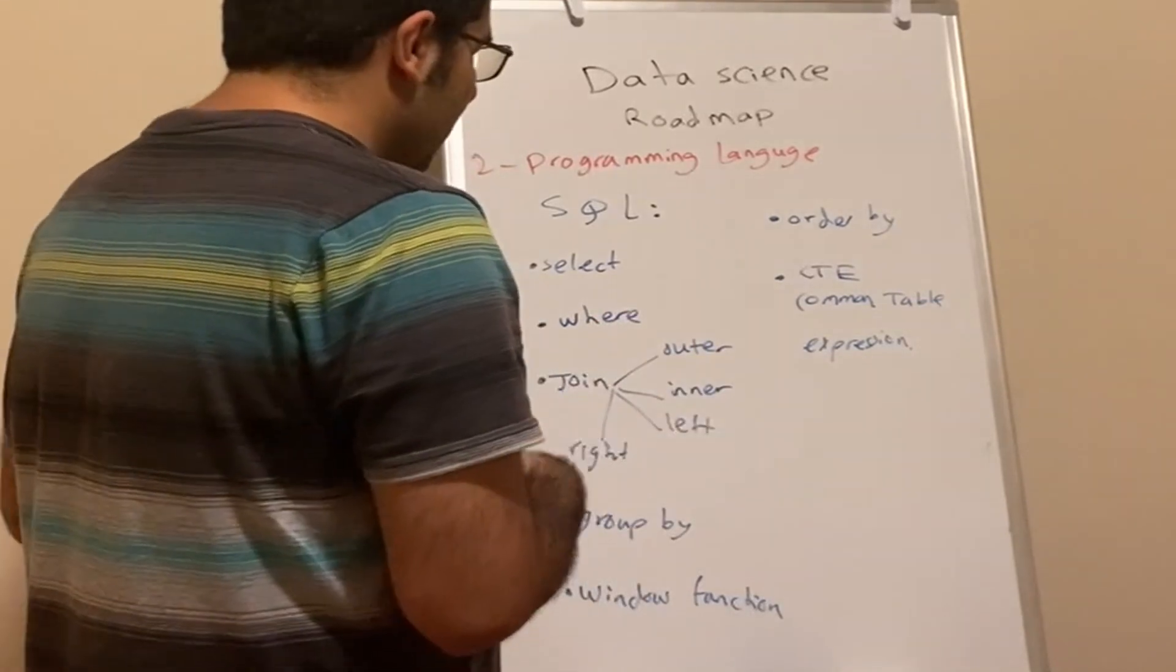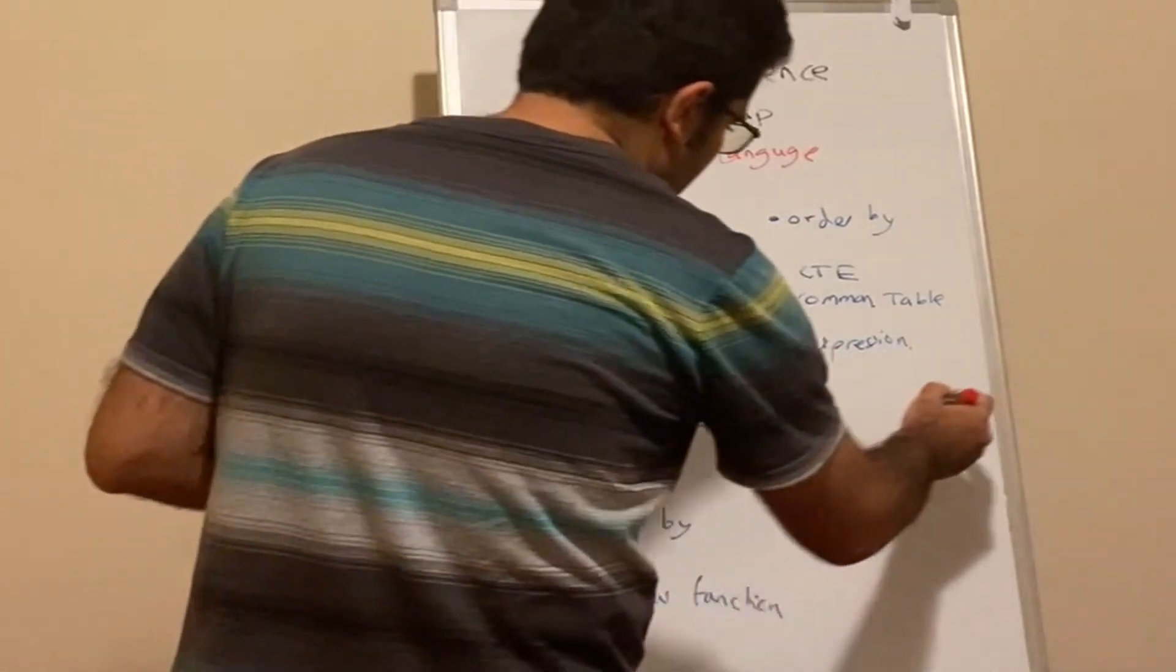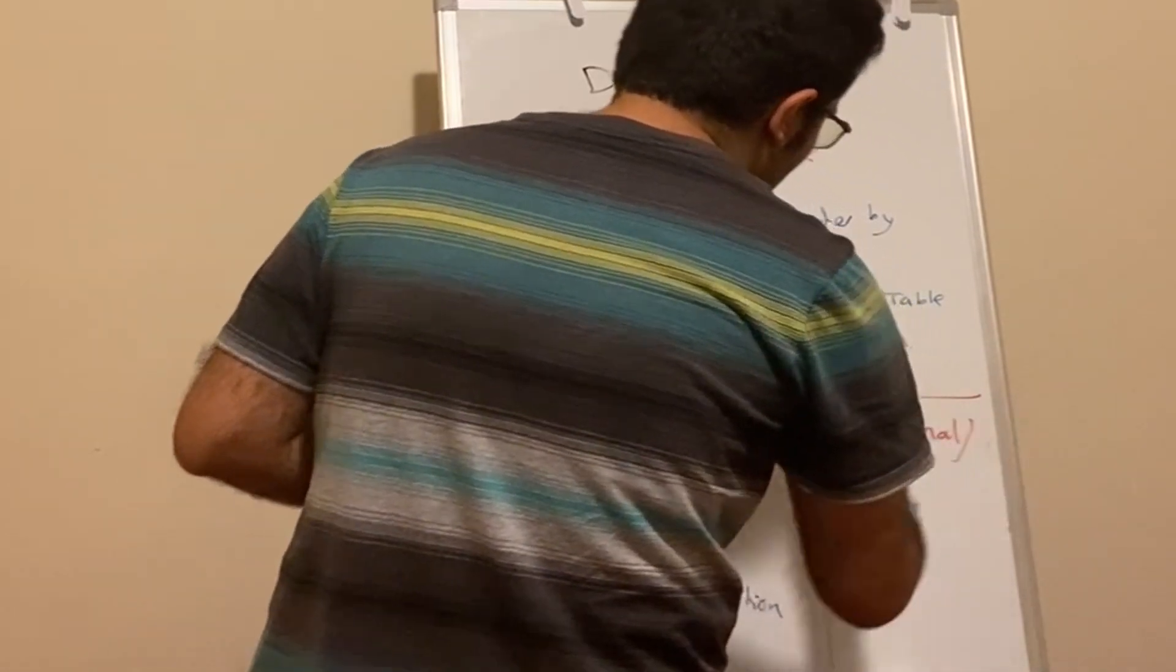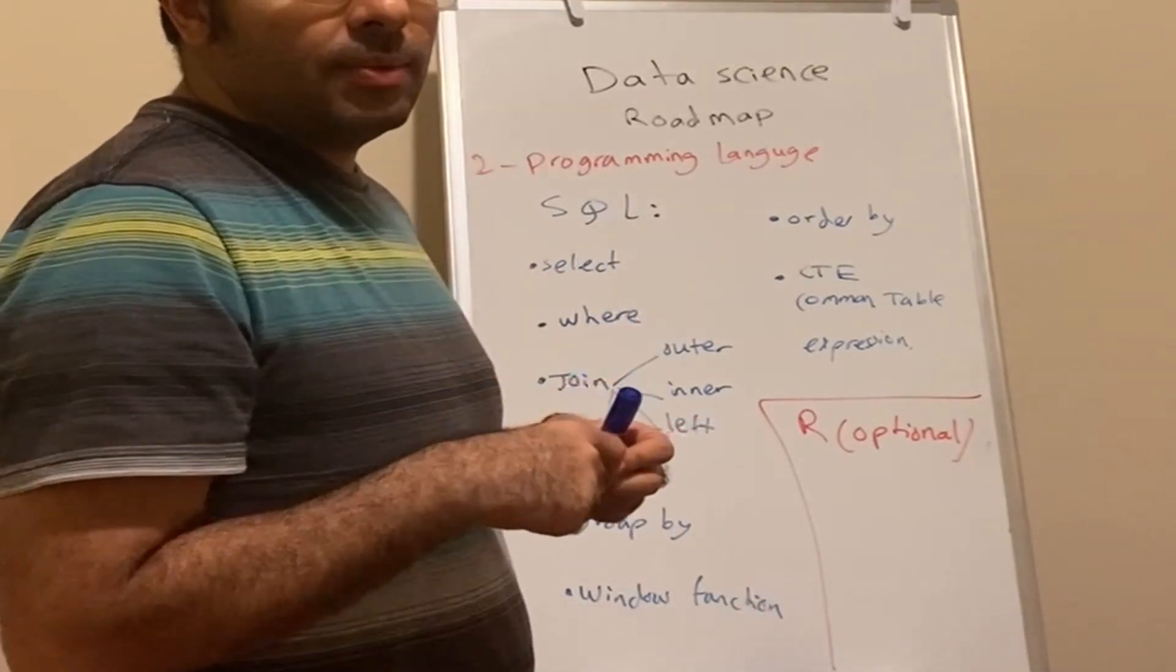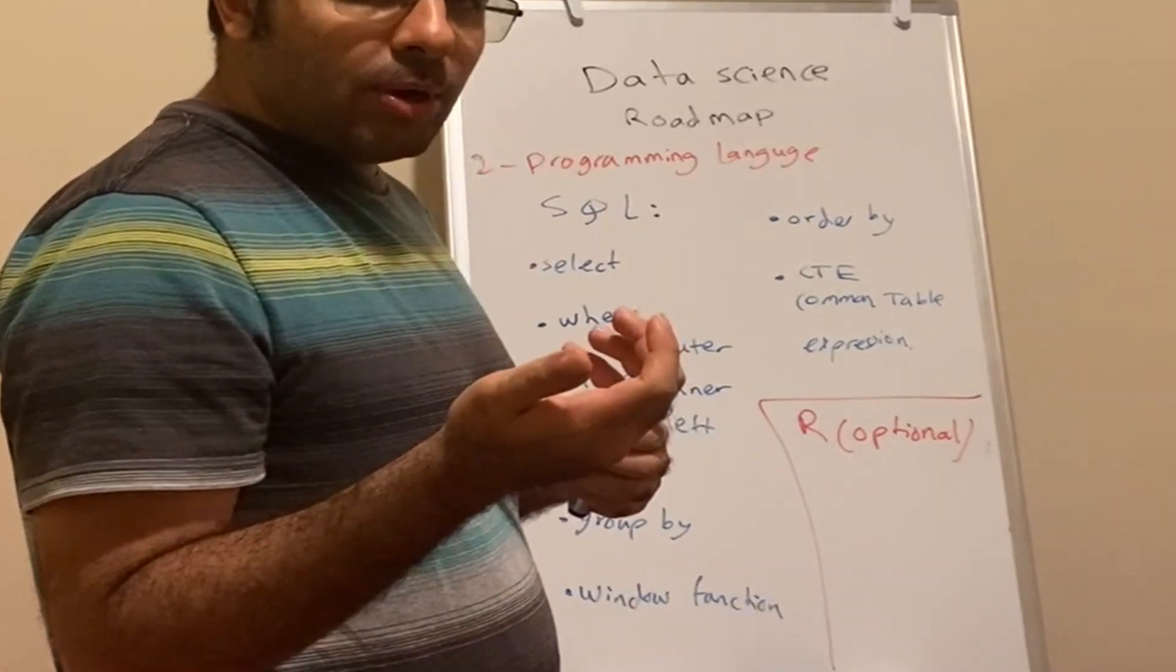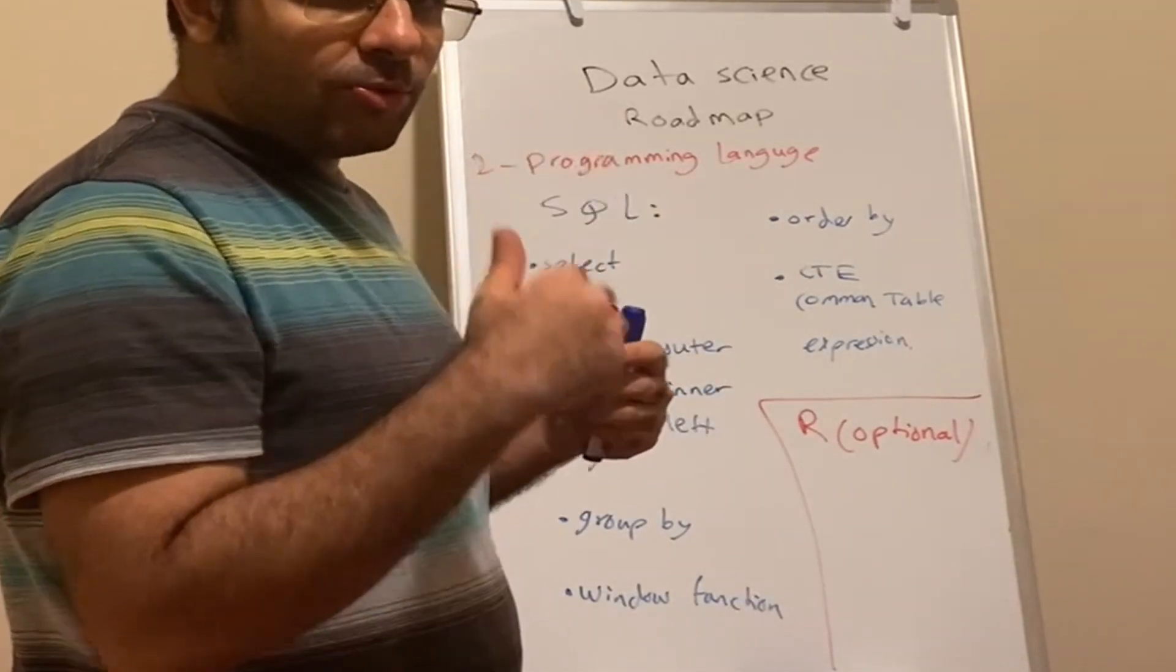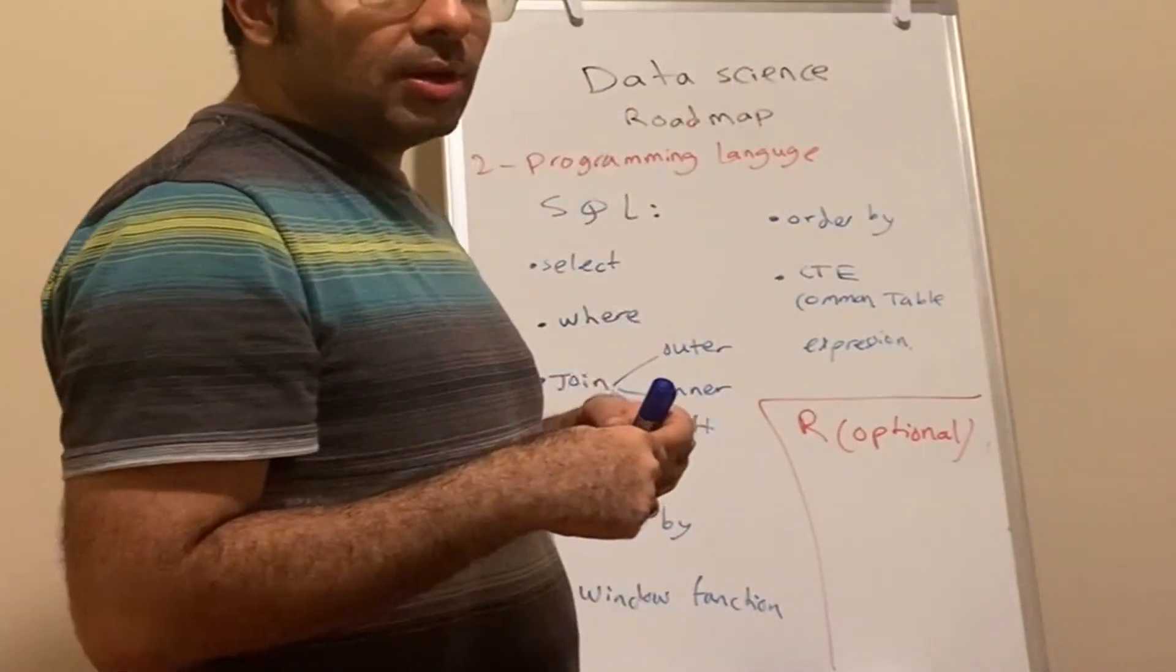Number one Python, then SQL. Then depending on the company, you may want to also know R. I'll use R as optional because R is a language mainly used in the statistical domain in academia. I don't think most tech companies even use R, because when you want to productionize a model, R code does not go to production. Also, software engineers do not really interact with R.